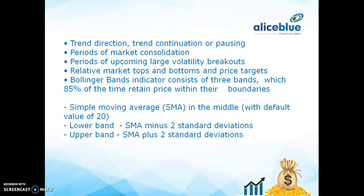Bollinger Bands can identify: trend direction, trend continuation, pausing periods of market consolidation, periods of upcoming large volatility breakout, relative market top and bottom, and price targets. The Bollinger Bands indicator consists of three bands which retain price within their boundaries 85% of the time, with a simple moving average in the middle.